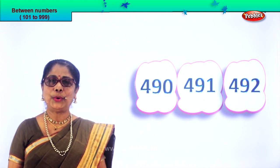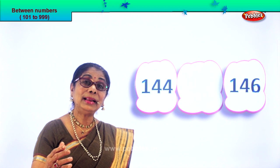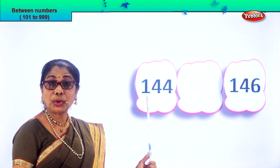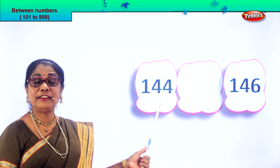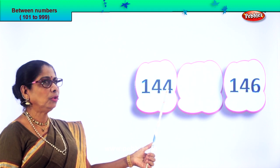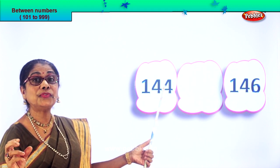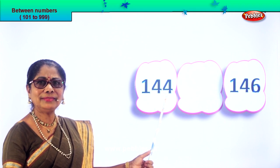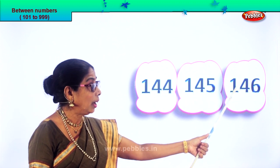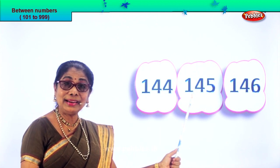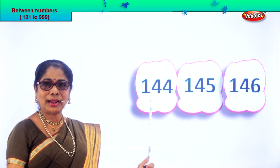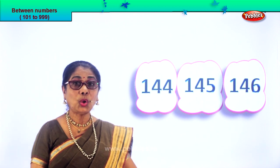Let's take another set of numbers and find the number between the two numbers. Here we are. Let's read aloud: 144 and 146. What's the number that follows after 4? After 4 follows 5, so after 144 comes 145. 144, 145, 146. So the number between is 145. After you put down the number, read aloud: 144, 145, 146.